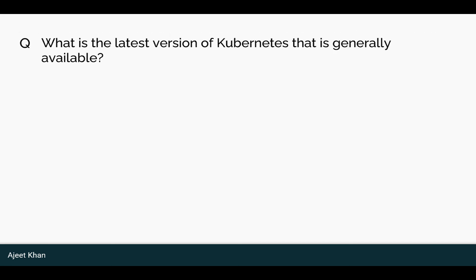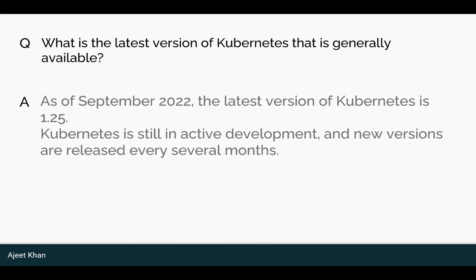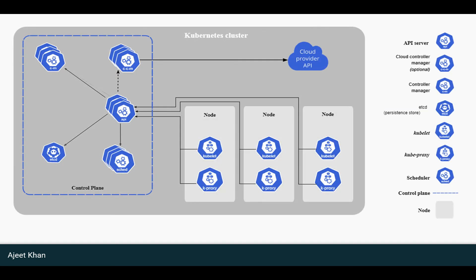What is the latest version of Kubernetes that is generally available? As of September 2022, the latest version of Kubernetes is 1.25. Kubernetes is still in active development, and new versions are released every several months.